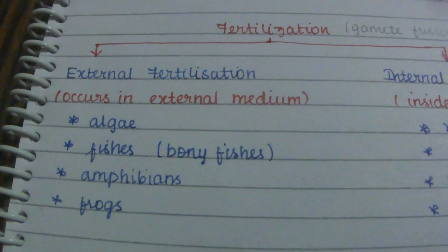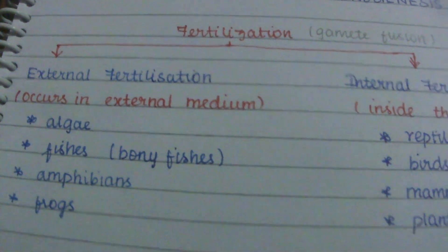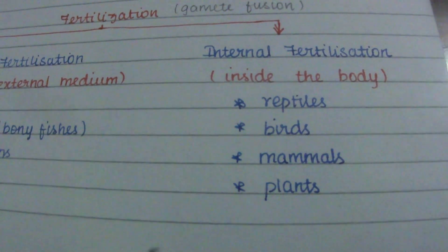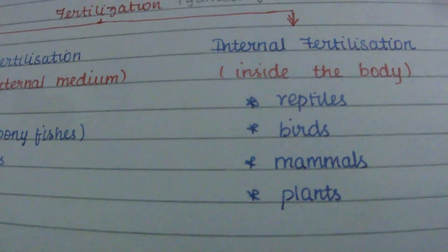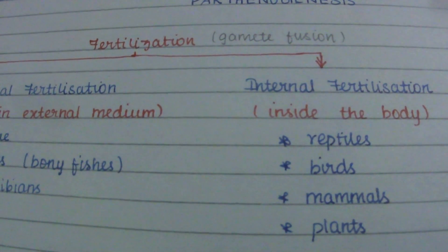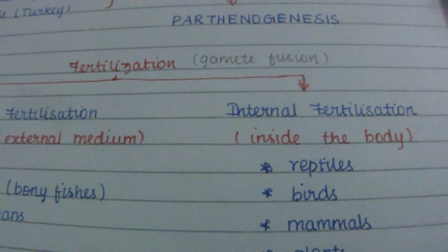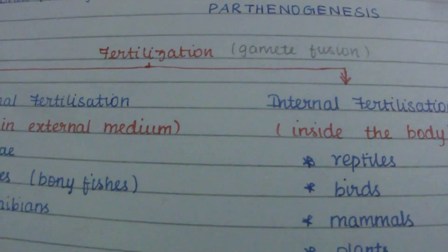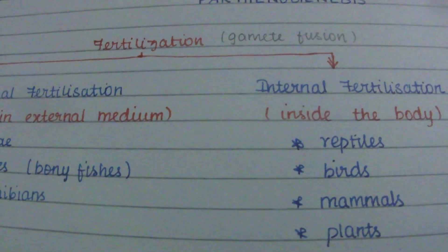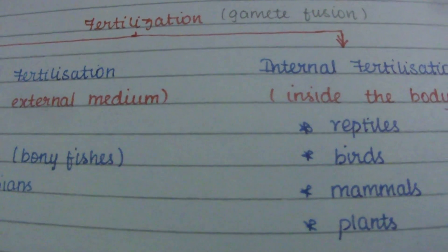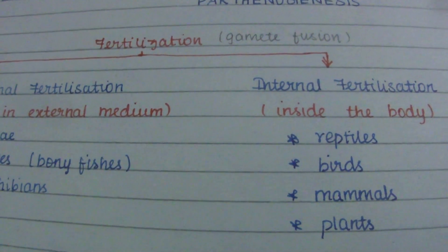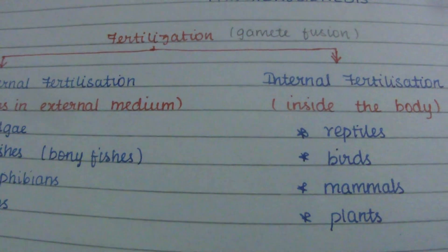Internal fertilization occurs in reptiles, birds, mammals, and plants such as gymnosperms, bryophytes, and pteridophytes — where syngamy occurs inside the body. The male gametes are motile so they can reach the egg or ovum to undergo fertilization. The number of sperms produced is large, but there is a significant reduction in the number of eggs produced.